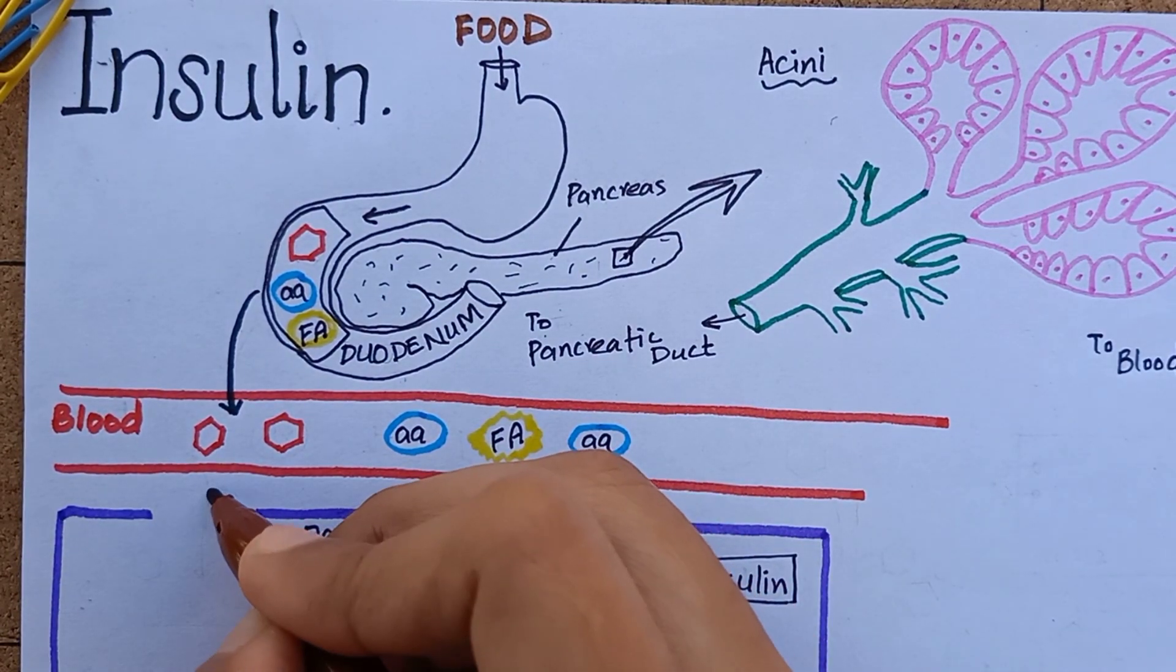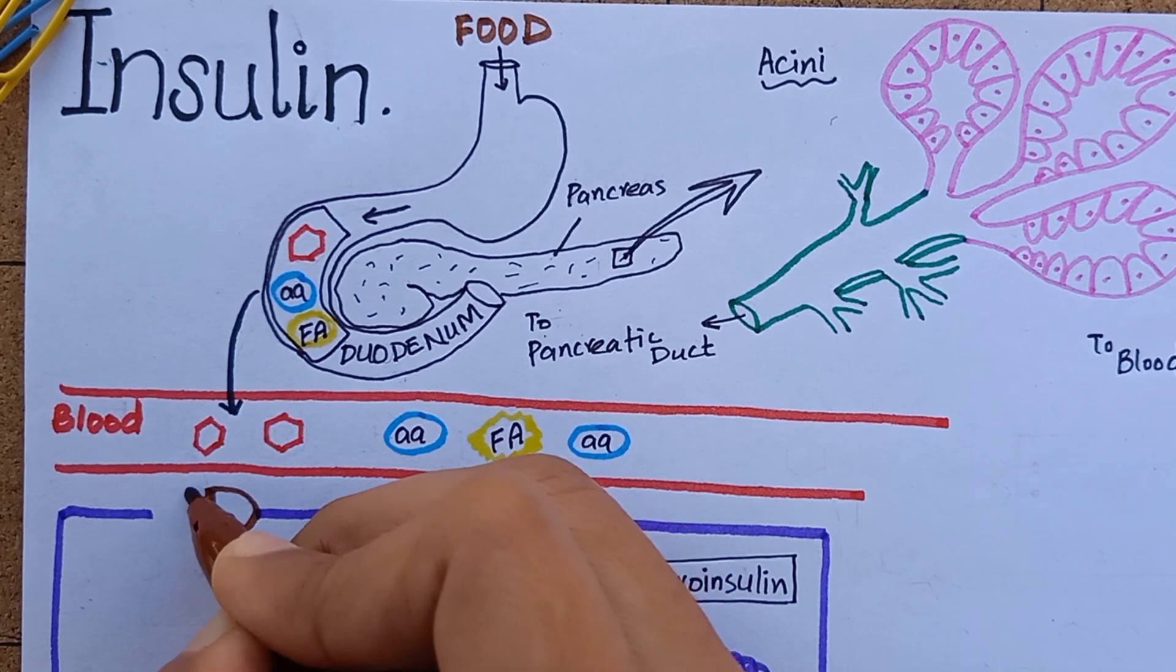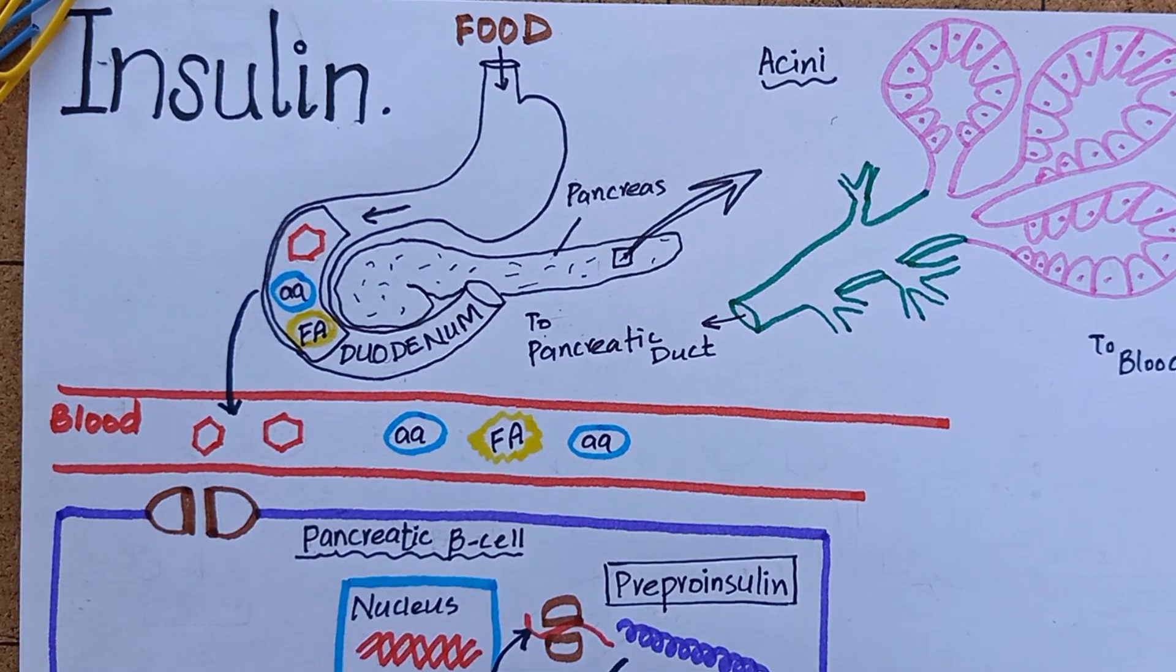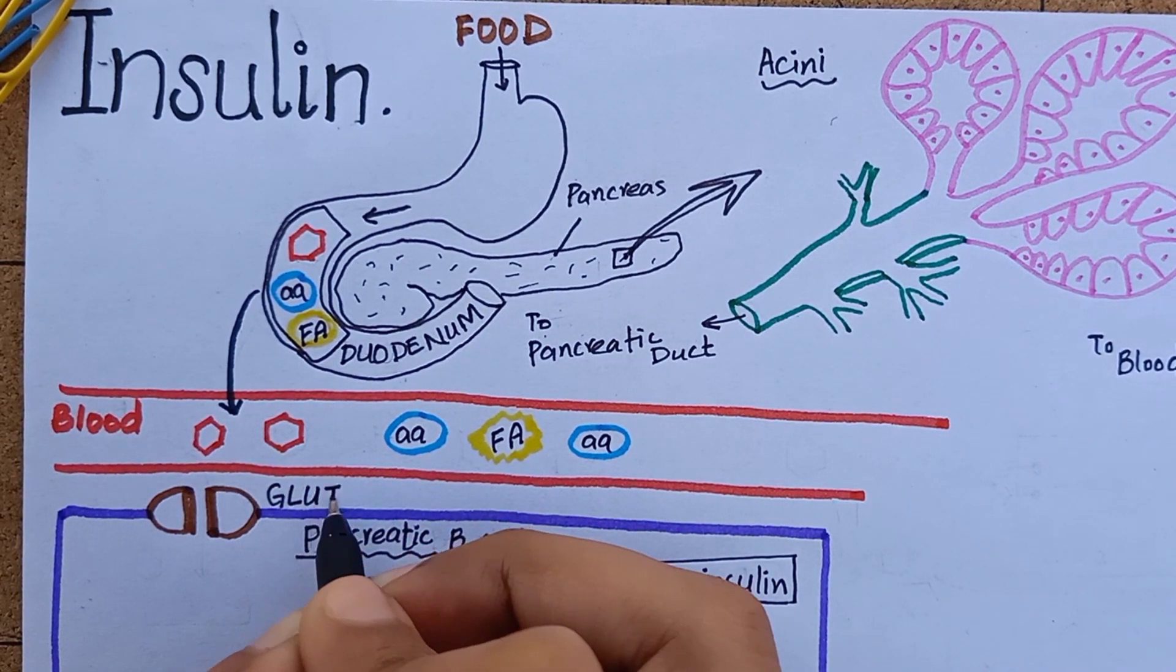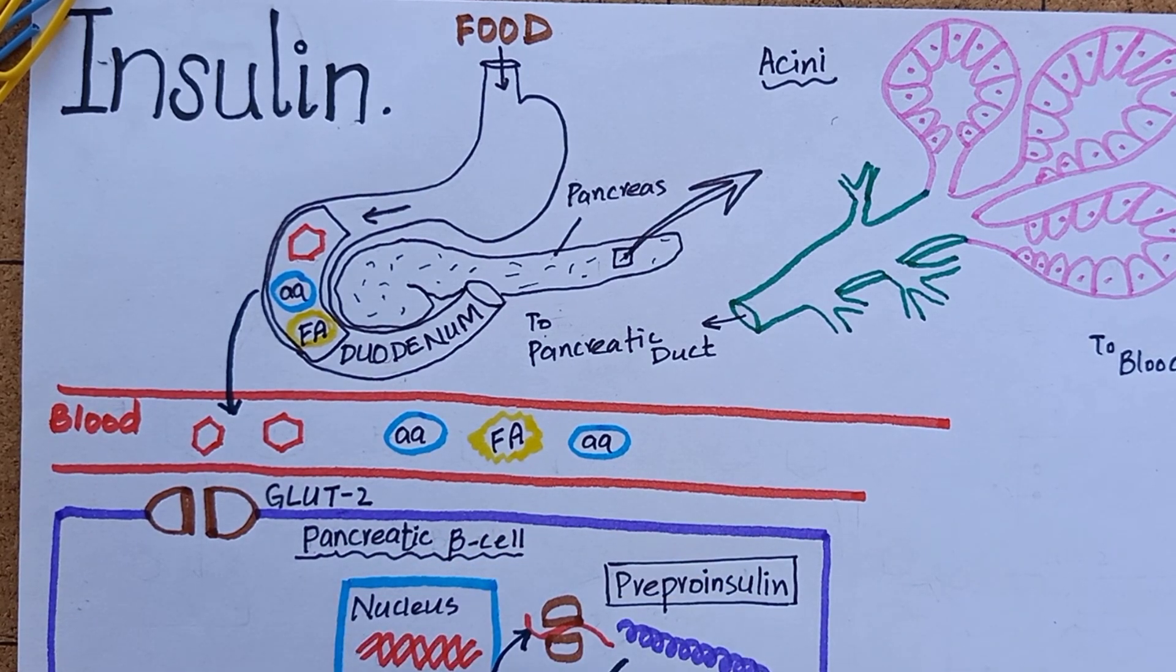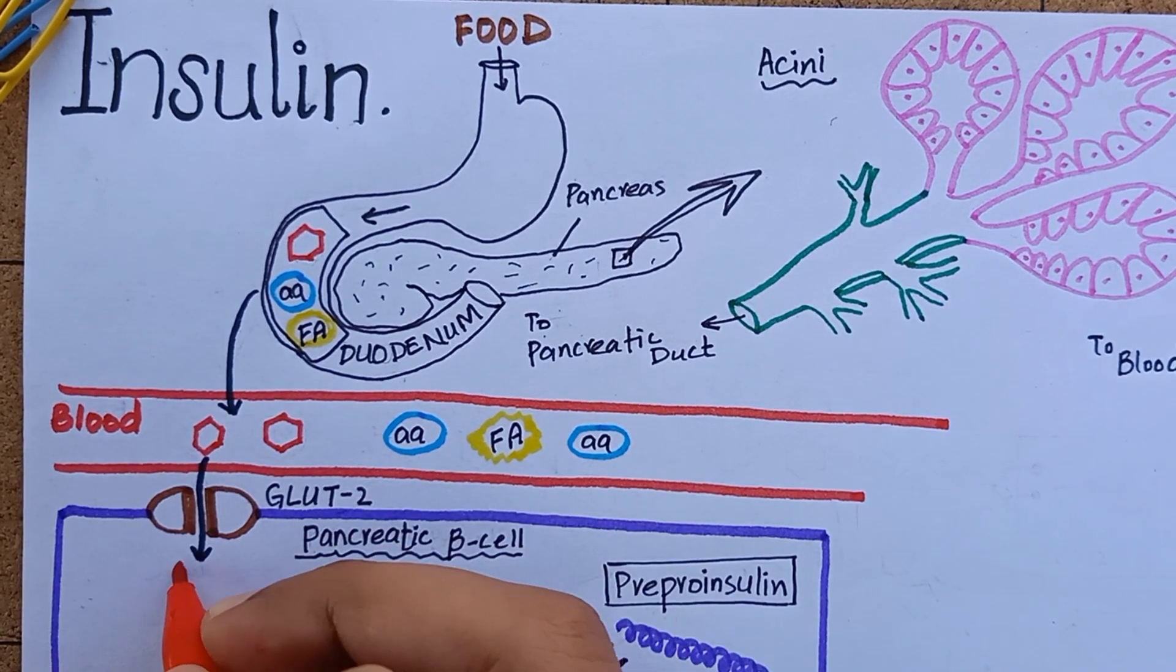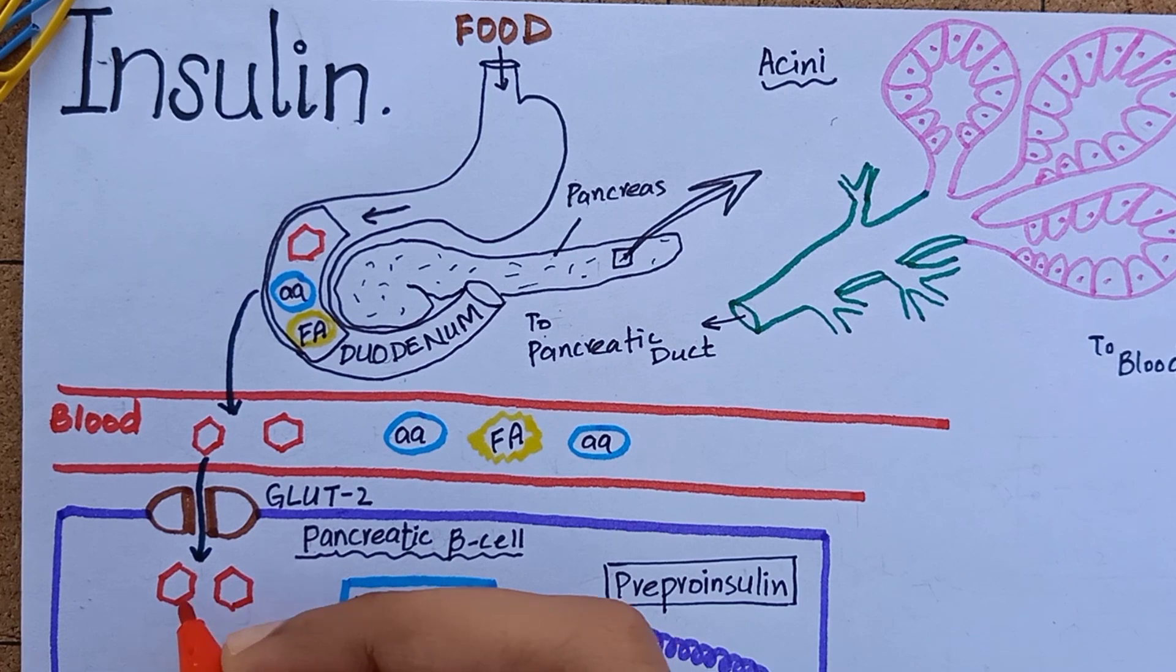The pancreatic beta cells are sensitive to blood glucose concentration. Their membrane contains large number of glucose transporters known as GLUT2. GLUT2 transporters are significant in that wherever they are in the body they do not require insulin for their activity. These GLUT2 transporters allow glucose influx at a rate that is proportional to blood glucose concentration.